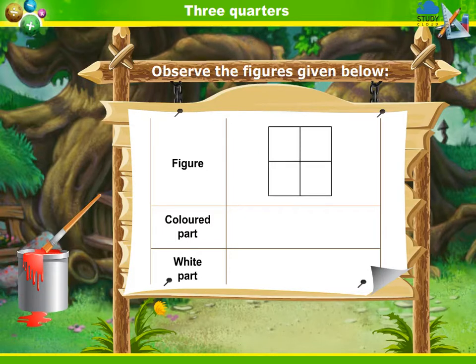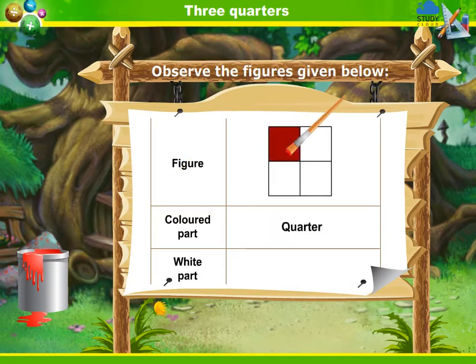The second figure is of a square whose one-fourth part is coloured and three-fourth part is white.